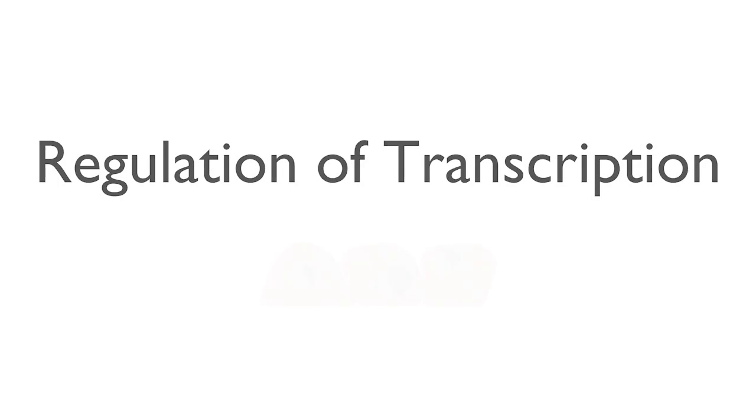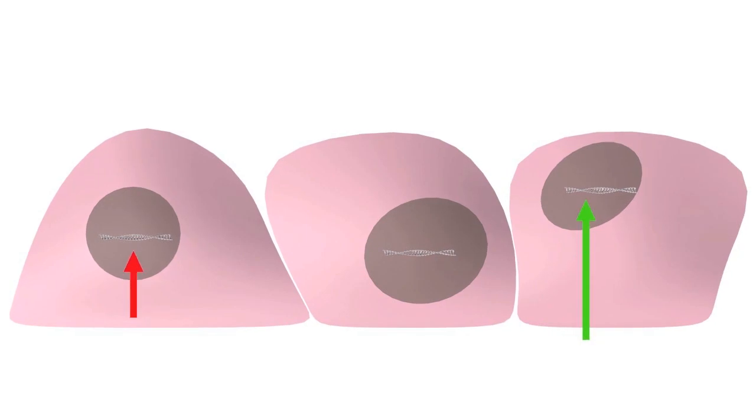The transcription of individual genes can be turned on or off in response to a variety of signals from inside and outside the cell. These signals enable the cell to adjust levels of RNA and the translated protein in response to changing conditions.